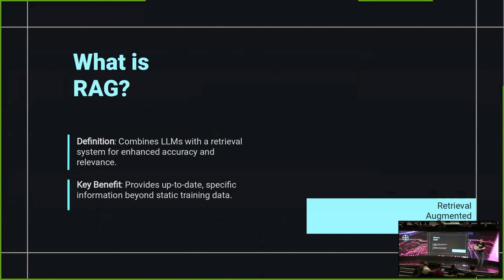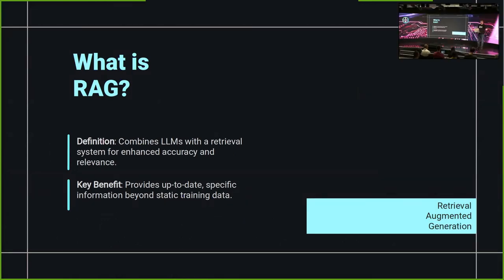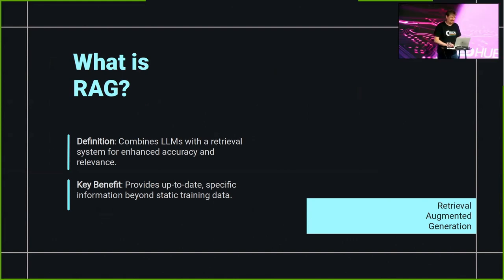What is RAG? The dry definition is it combines LLMs with a retrieval system for enhanced accuracy and relevance. The key benefit is that it provides up-to-date, specific information beyond static training data.